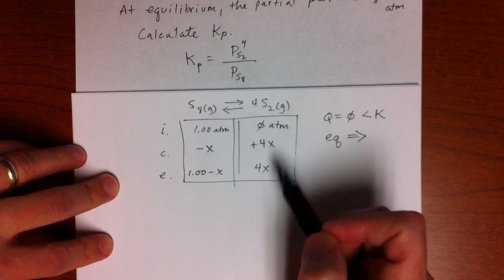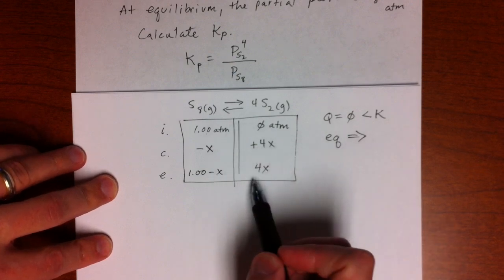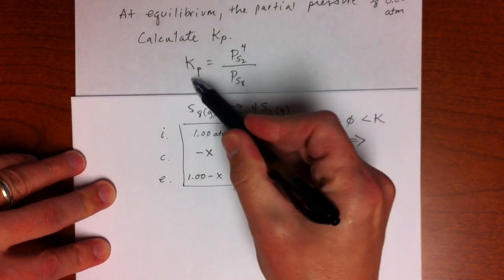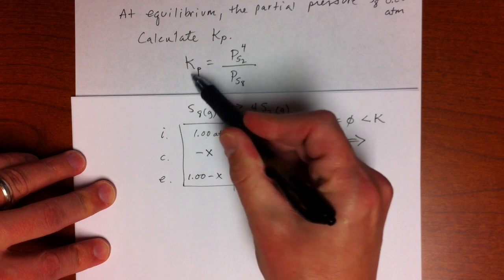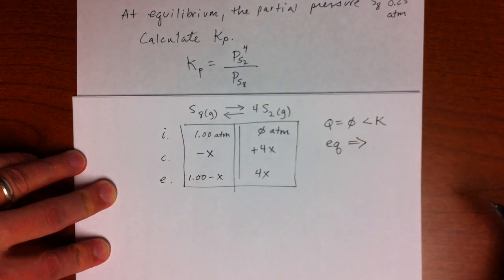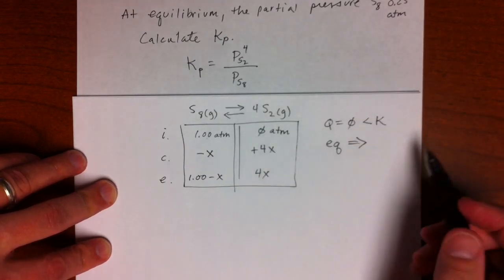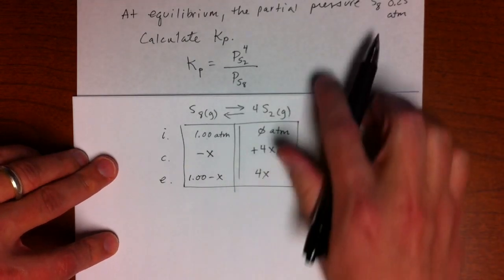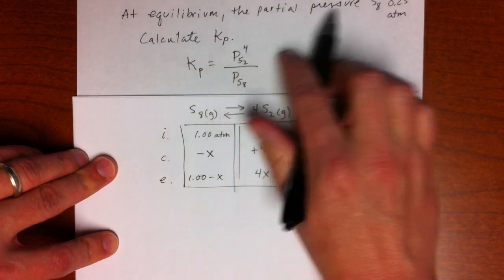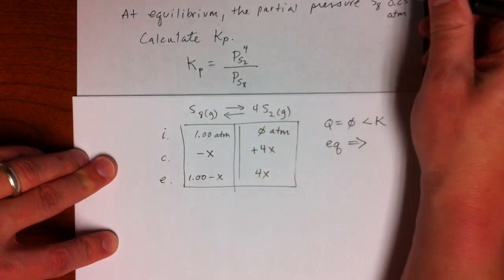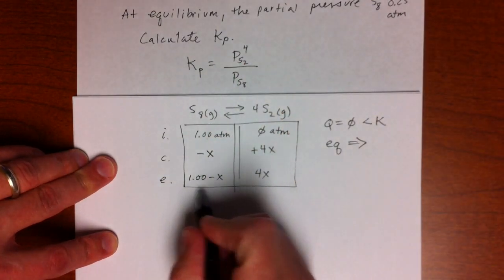Now, in the other problems, we would put these back into this and solve for X, but we knew KP in those cases. In this problem, we don't know KP. So there's some other key information right here. It says at equilibrium, the partial pressure of S8 is 0.25 atmospheres. So that's this.